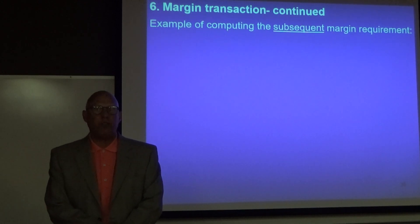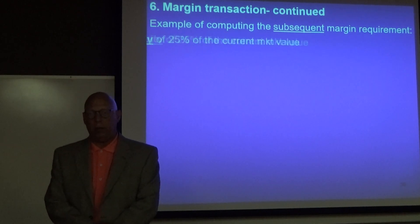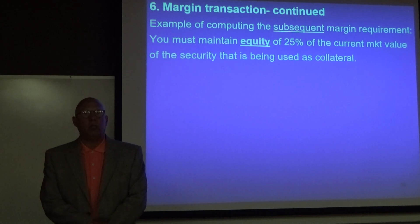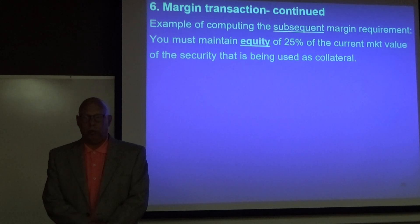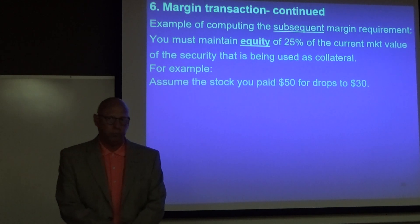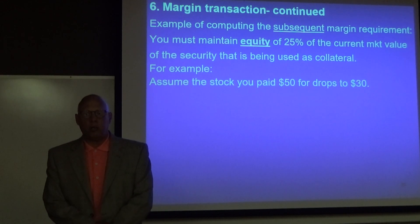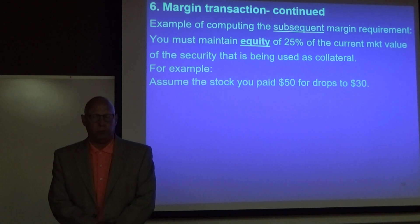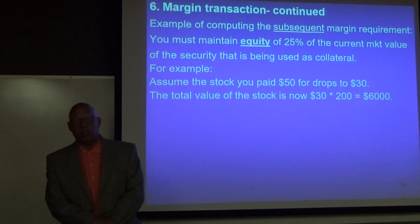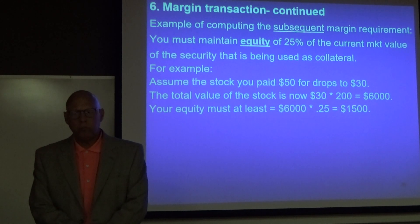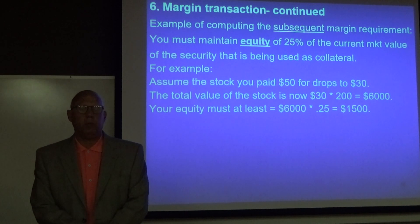Now let's look at the 25% subsequent margin requirement. You must maintain equity of 25% of the current market value of the security being used as collateral. You have a $5,000 loan backed by $10,000 worth of securities. Let's assume the stock you paid $50 per share for drops to $30. The total value of the stock is now $30 times 200 shares, which is $6,000. Your required equity is $6,000 times 0.25, which equals $1,500.